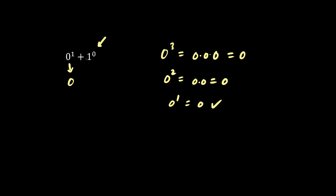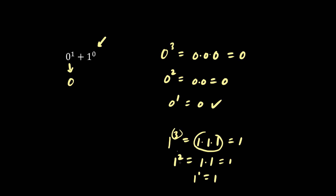In general, anything to the 0 is 1. When we have 1 cubed, we have 1 times 1 times 1. 1 squared is 1 times 1, which is also 1, and 1 to the 1 is 1. As we decrease the power, we divide by 1. So we go from three 1s to two 1s to one 1, but we're just dividing by 1. 1 divided by 1 is simply 1. So 1 to the 0 is 1, and 0 plus 1 is 1.